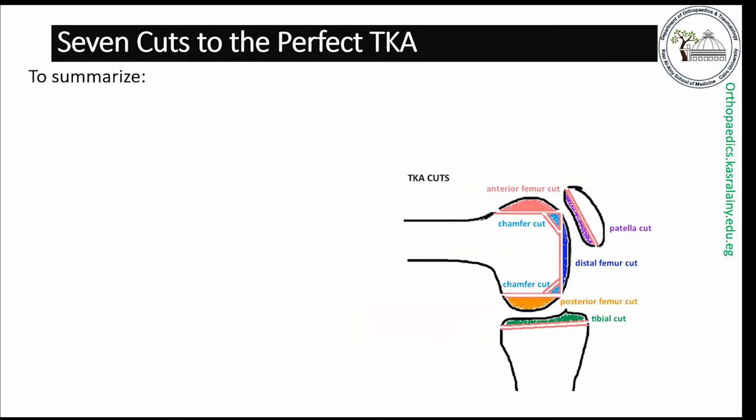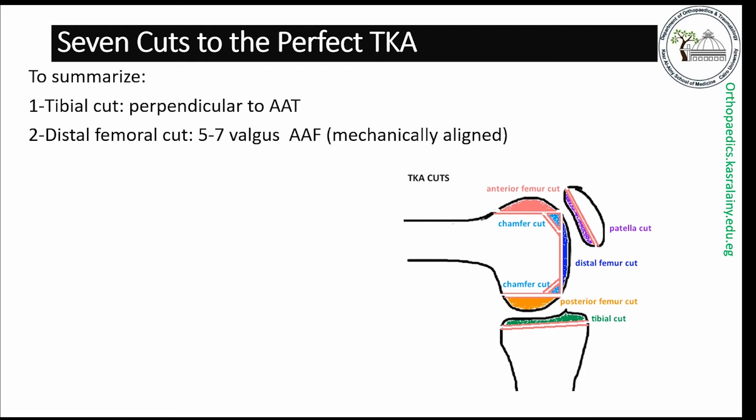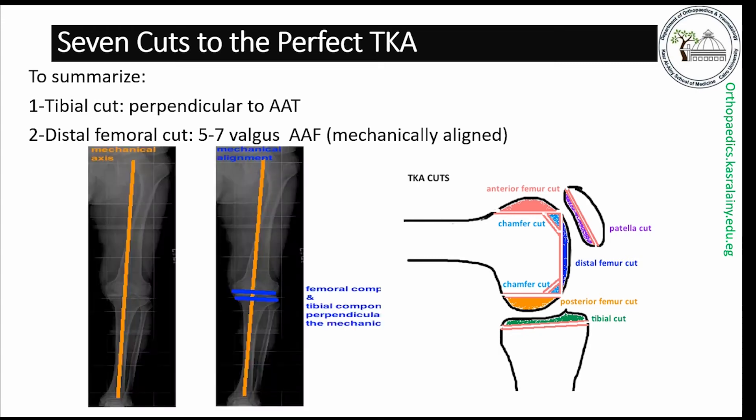To summarize the cuts: the first cut is the tibial cut, which is perpendicular to the anatomic axis of the tibia. The second cut is the distal femoral cut, which is 5 to 7 degrees valgus to the anatomic axis of the femur. Making these cuts in this orientation brings them perpendicular to the mechanical axis of the limb.